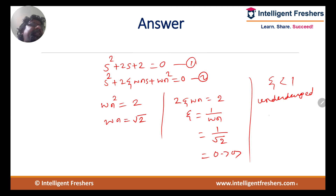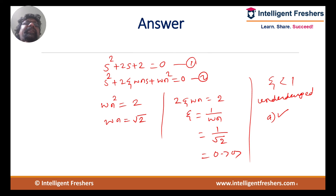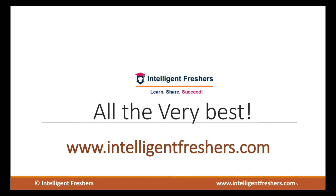From the given options, the correct answer is option A: the system is underdamped. In the examination, to avoid negative marking, compare the given equation with the standard second order control system equation and get the answer very quickly. With this, I will stop here — thank you very much, all the very best.